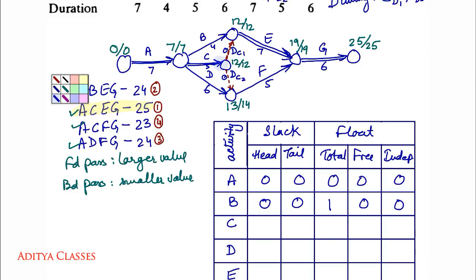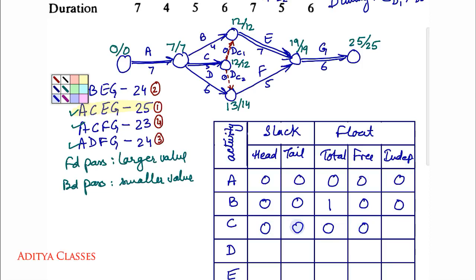For activity C: head slack is 12 minus 12 equals 0; tail slack is 7 minus 7 equals 0. Total float: 12 minus 7 minus 5 equals 0. Free float: 0 minus 0 equals 0. Independent float: 0 minus 0 equals 0.